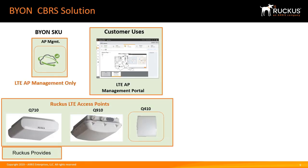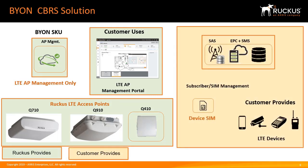In the BYON solution, Ruckus will sell LTE APs and AP management licenses. Ruckus LTE access points include the indoor Q710 and Q410 and the outdoor Q910. The customer will set up the LTE AP management portal to install, configure, and manage their LTE AP network. Customers will provide all the other components for the application.